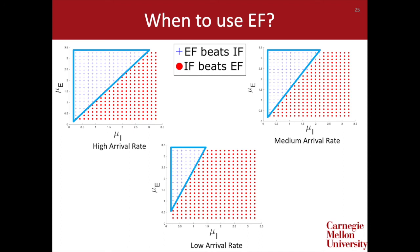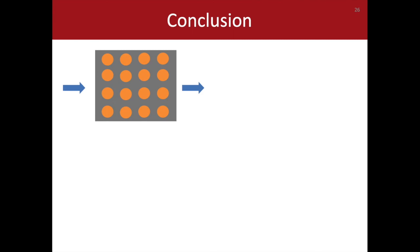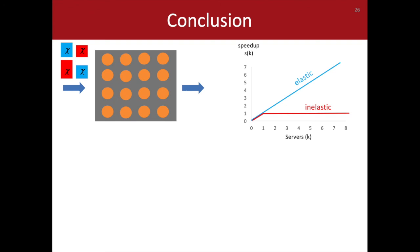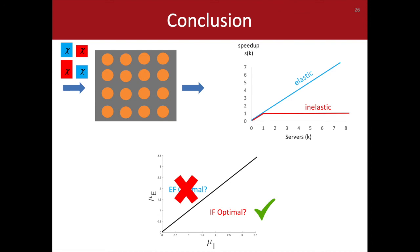To wrap up: today we discussed a model for server allocation in data centers where parallelizable jobs arrive over time, including both elastic and inelastic jobs of various sizes. We discussed how an optimal policy must balance current system performance with future efficiency. Although we cannot find an optimal policy when elastic jobs are smaller than inelastic jobs on average, we show that when inelastic jobs are smaller, the optimal policy is Inelastic First (IF), which gives strict priority to inelastic jobs. This demonstrates that by making stochastic assumptions, we can effectively get around the lower bounds that exist for worst-case analysis.